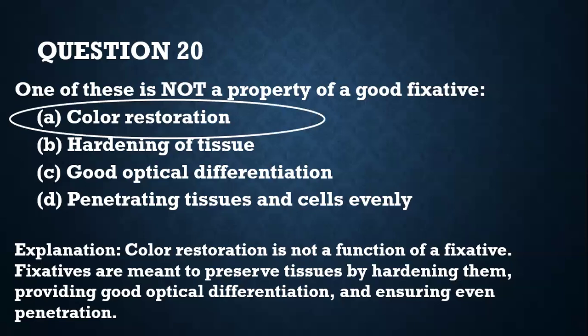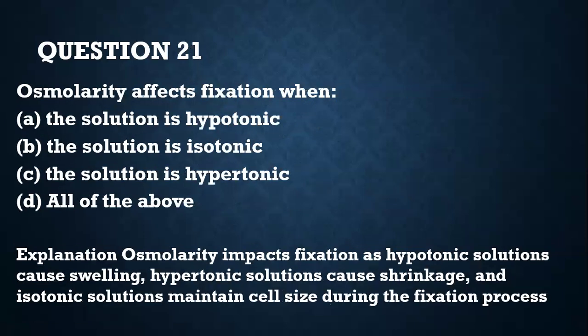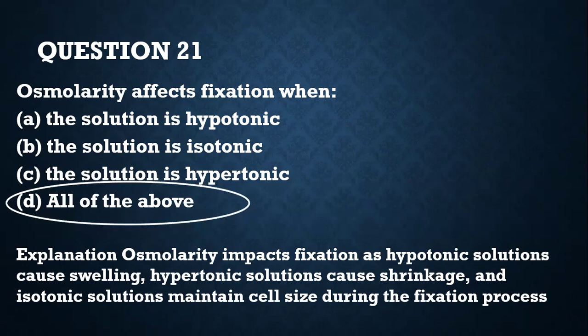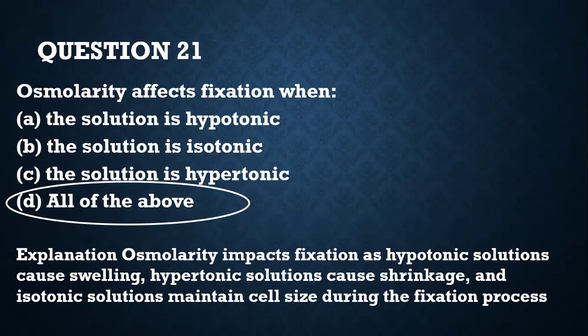Question 21. Osmolarity affects fixation when: A — the solution is hypotonic; B — the solution is isotonic; C — the solution is hypertonic; D — all of the above. All of the above, because if the solution is hypotonic the tissue will swell, if it is hypertonic the tissue will shrink, and if isotonic you will maintain correct cell size during fixation.